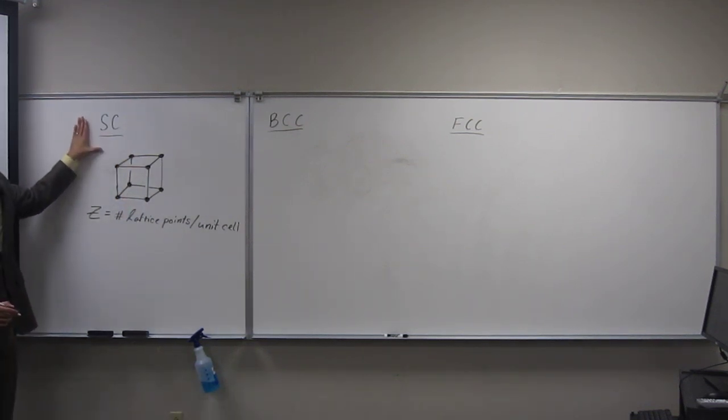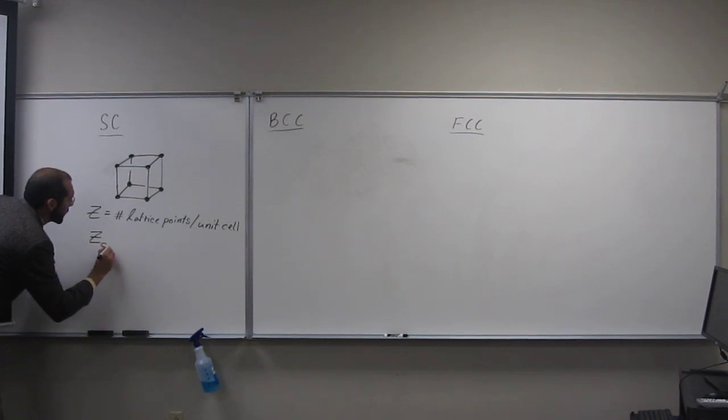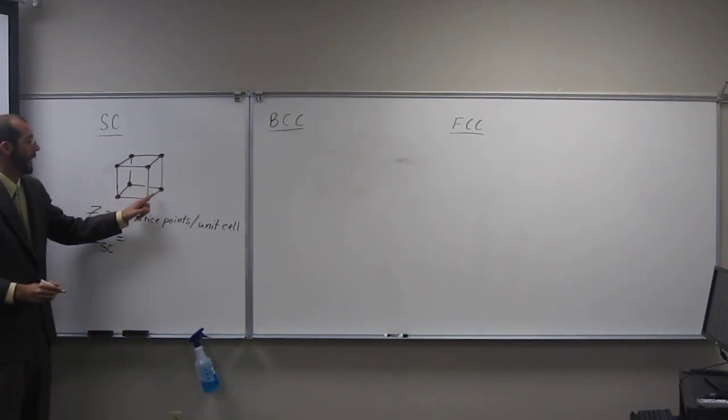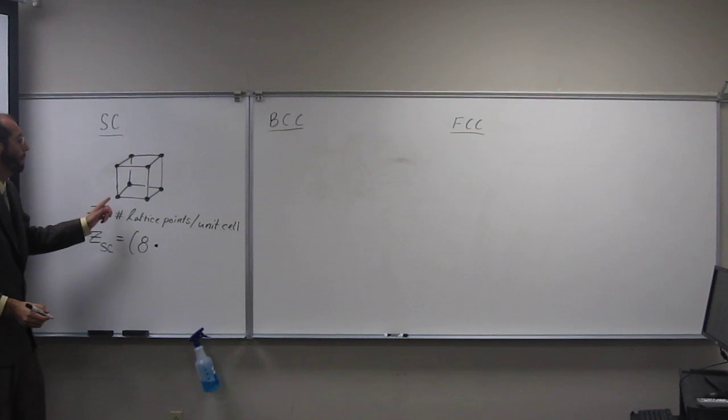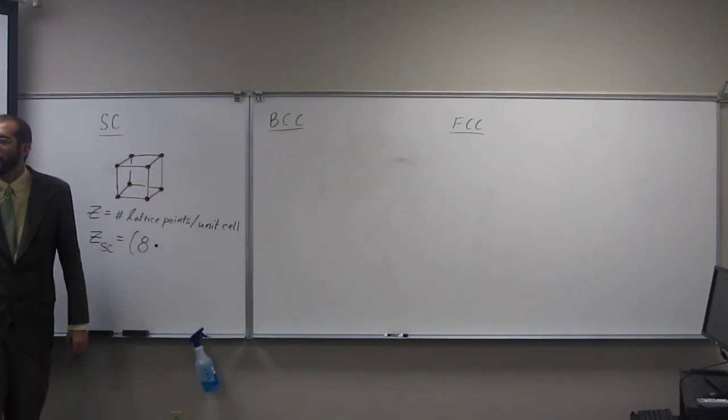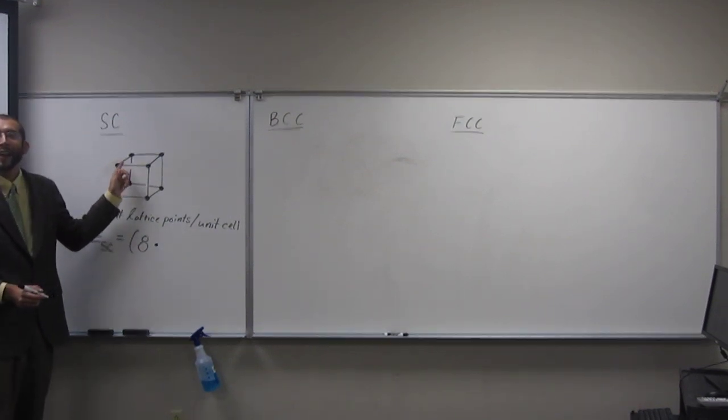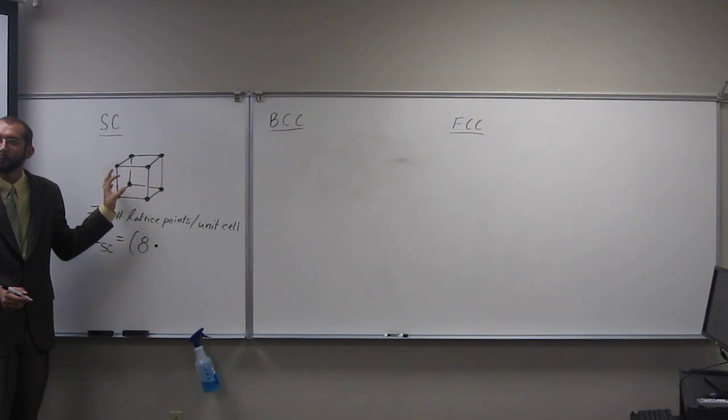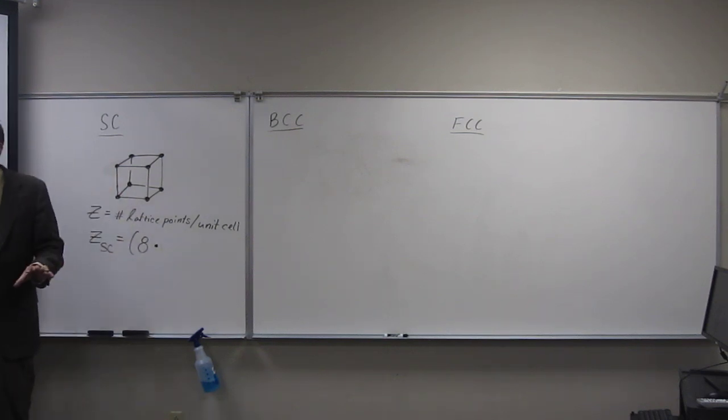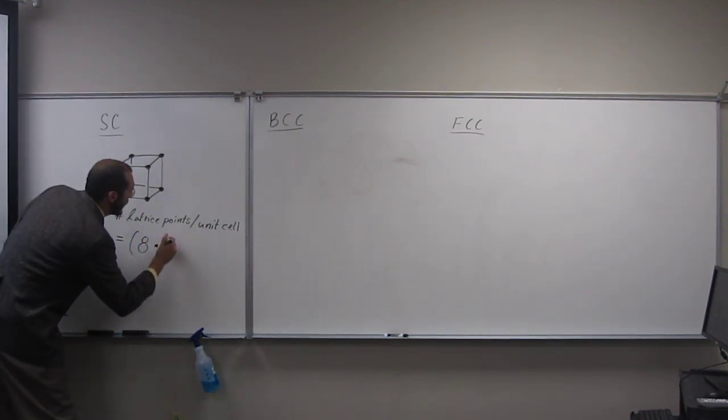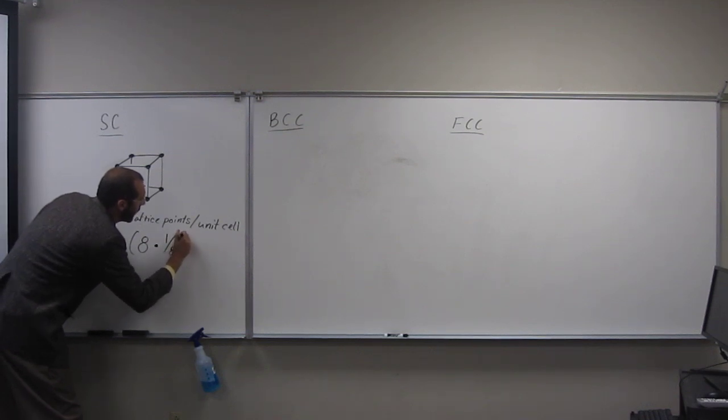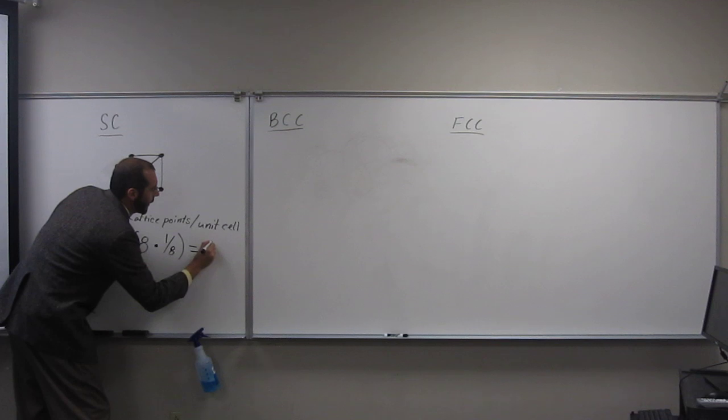So, in the case of a simple cubic, or a primitive cubic, I believe your book uses, the number of lattice points is going to be those eight atoms. So, eight times the amount of each of those atoms that's within that cubic cell. So, there's one-eighth of each one of those atoms within that cubic cell. And if you're not okay with it right now, think about it. I'll show you a picture, or I'll show you an actual model when we get to the lab. So, one-eighth of each one of those is within that unit cell. So, you go eight times one-eighth, and that equals one.